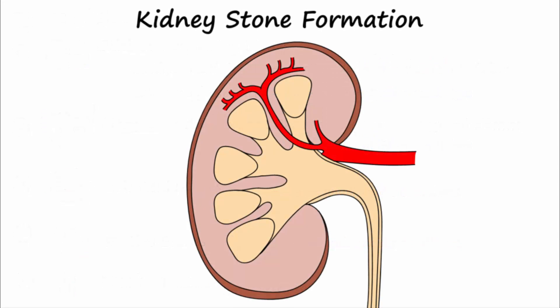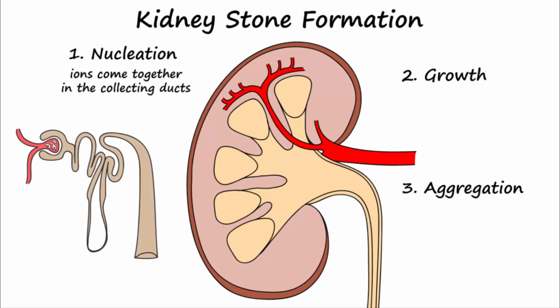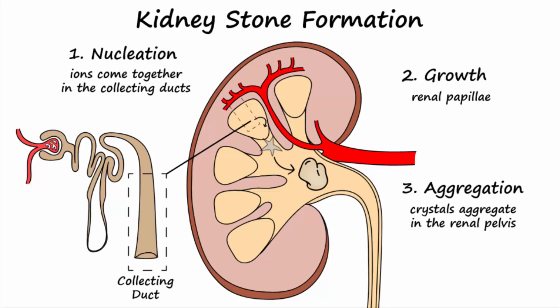Three major steps in the formation of kidney stones include nucleation, growth, and aggregation. Nucleation refers to ions such as calcium and oxalate coming together to form a solid crystal nidus, and this most often occurs in the collecting ducts. These crystals are dumped into the renal papillae where they grow in size. In the renal pelvis, the crystals will aggregate with one another to form larger crystals and stones, at which point they may leave the renal pelvis and travel into the ureter.